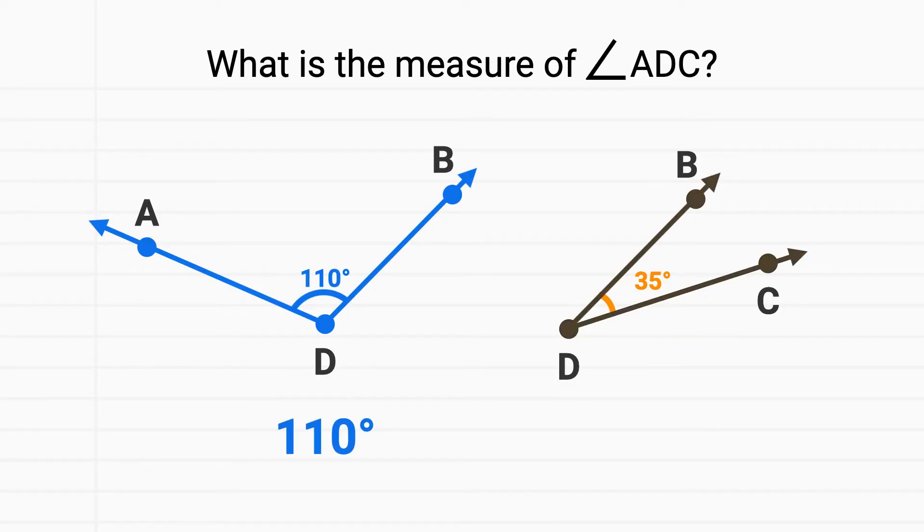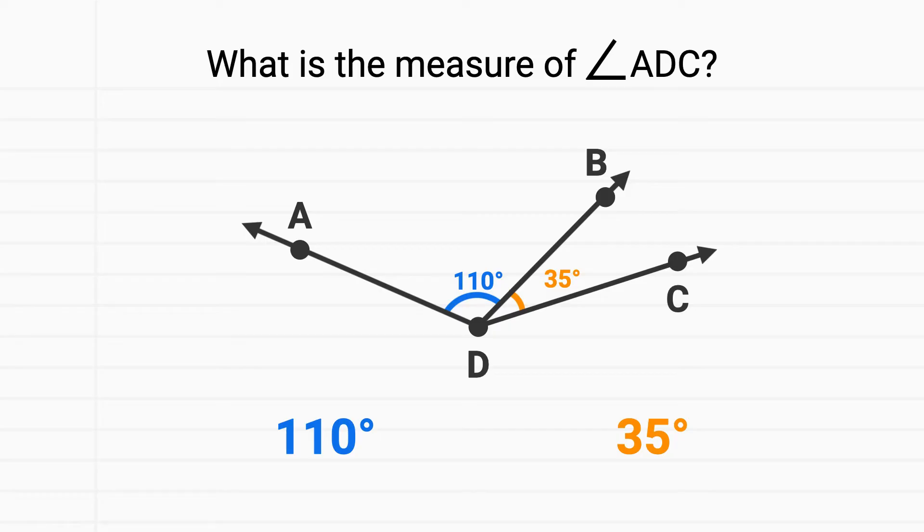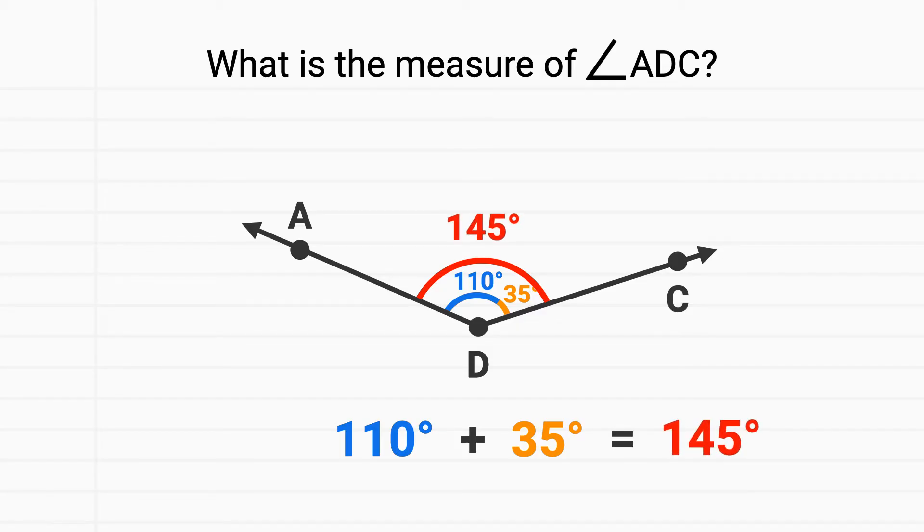And we have angle BDC in orange, which has a measure of 35 degrees. Now if you put these two angles together, you get the entire angle ADC. So all we need to do is add together 110 and 35 to find the total. Well we can do that and find that angle ADC has a measure of 145 degrees.